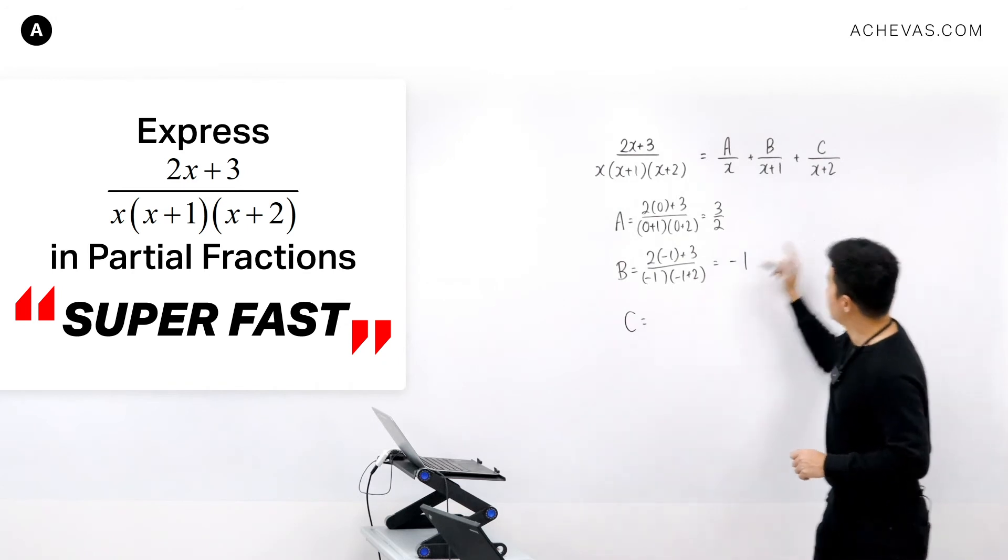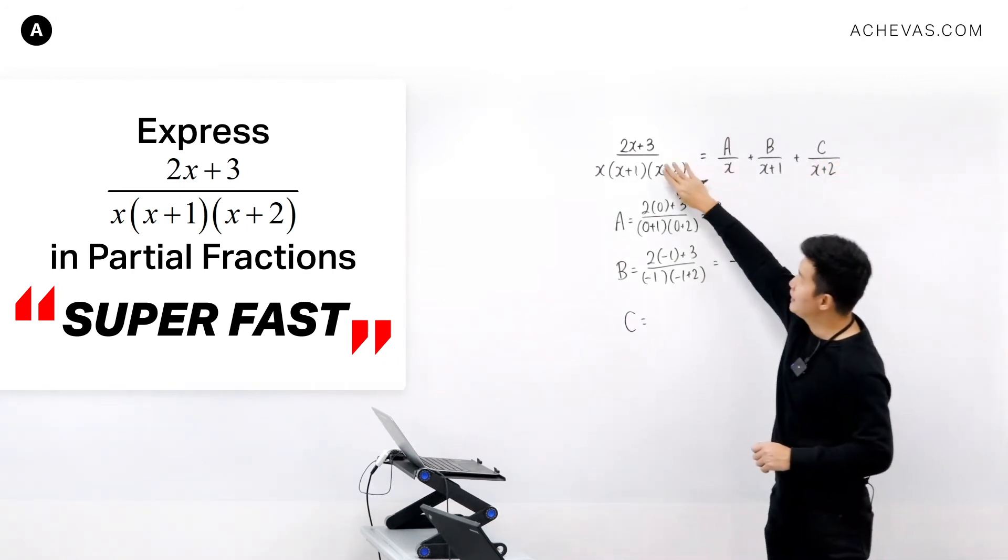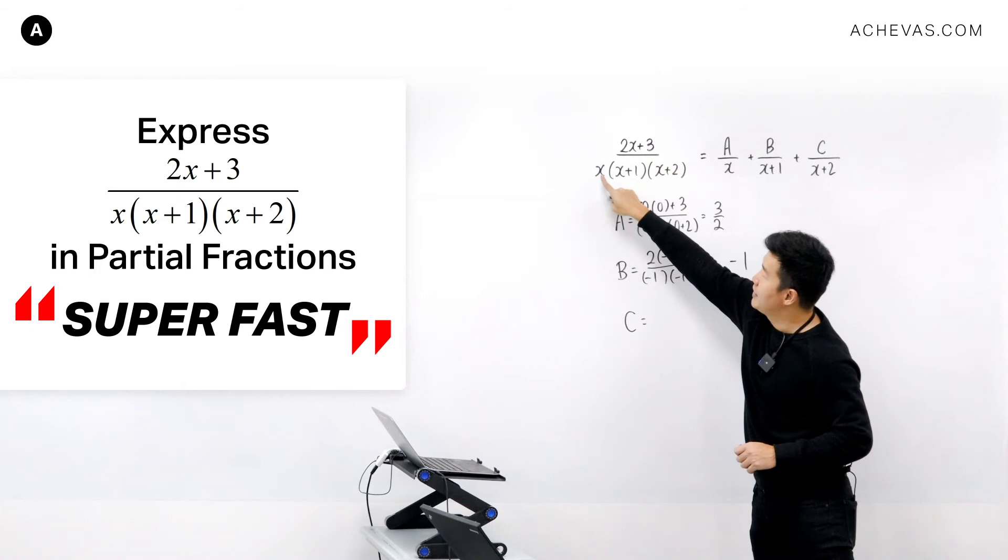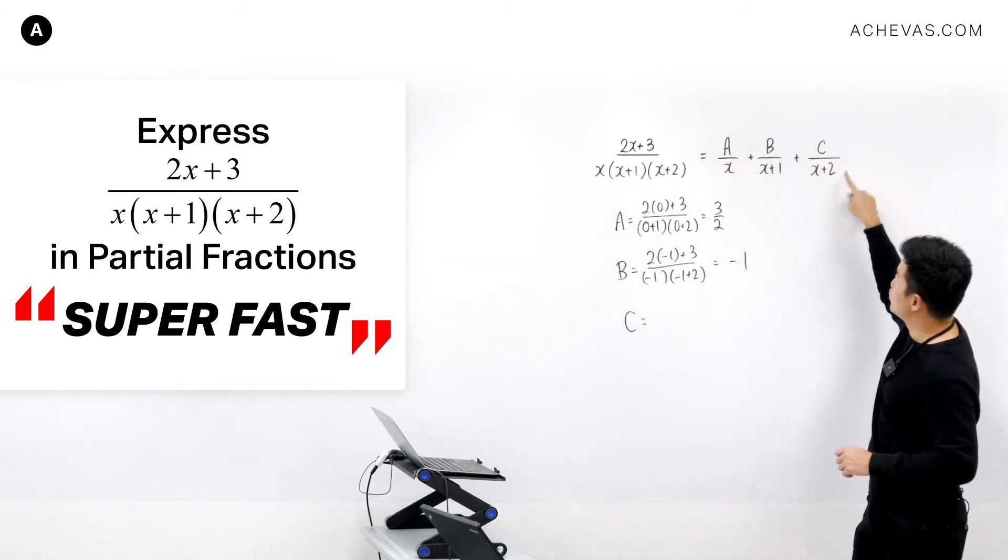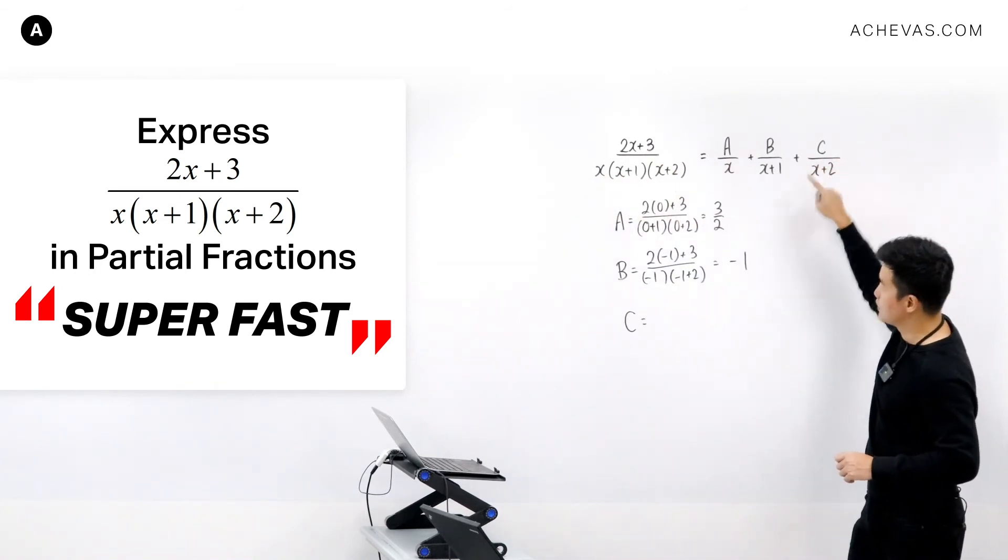For C, in the denominator of C is X plus 2. I am going to ignore X plus 2, and I'll replace the rest of the X by minus 2, which is the value that caused the denominator here to be equal to 0.